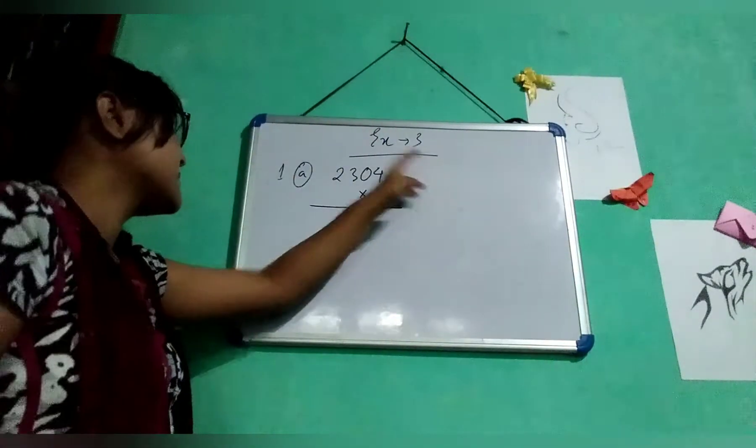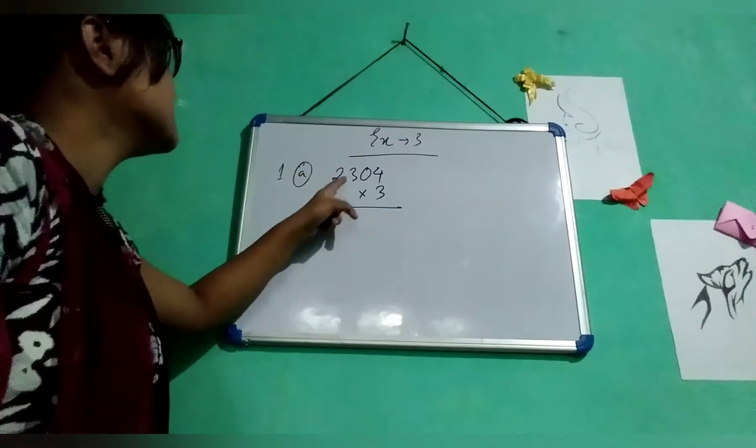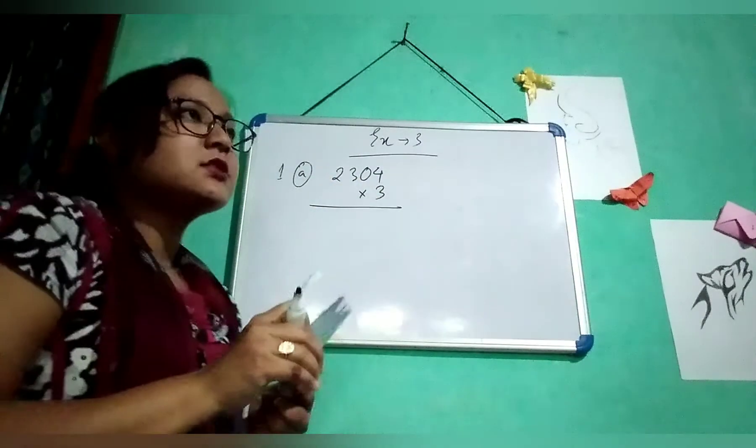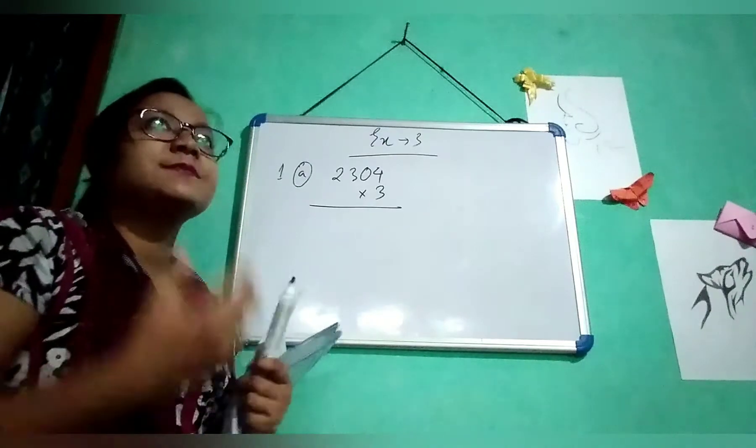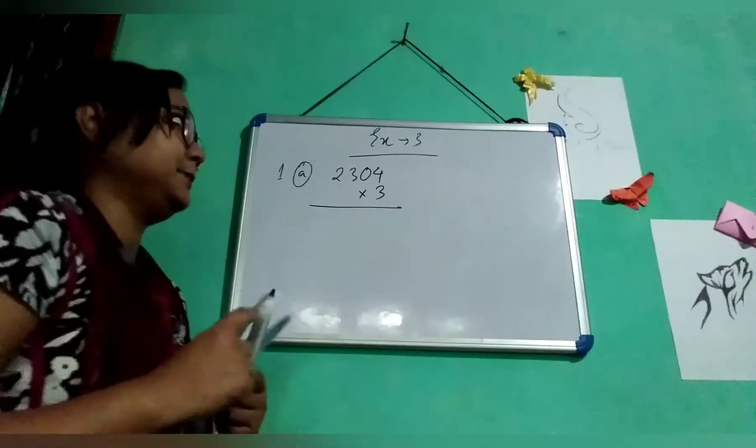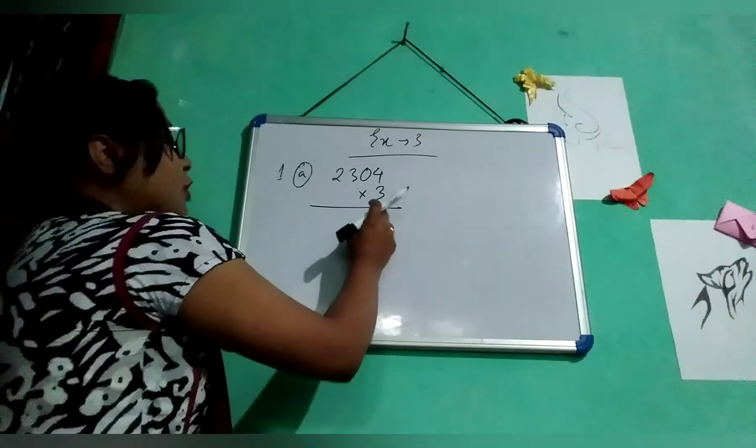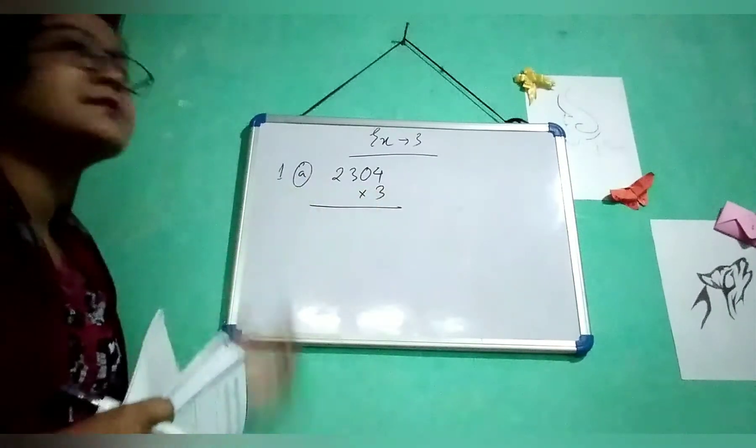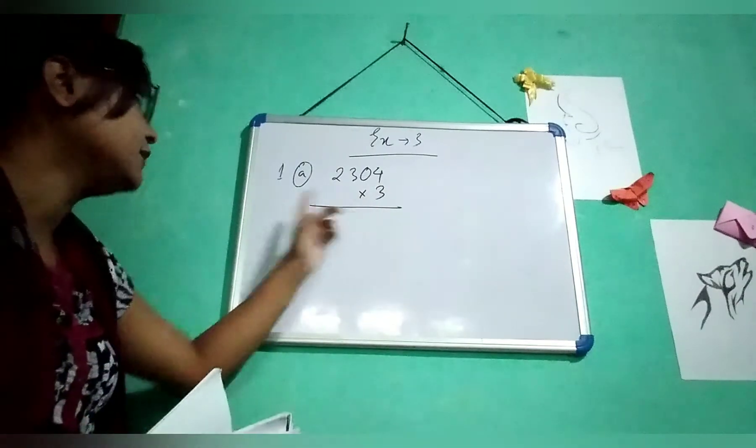I am doing Exercise 3.1A. This is 2304 into 3, you need to multiply. In case of addition, subtraction or multiplication, we always go from the last digit to first digit. We solve the sum from the last digit to first digit, that means from right to left.